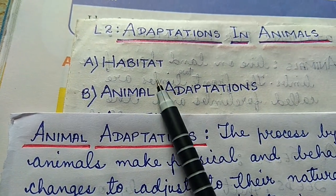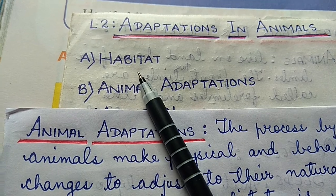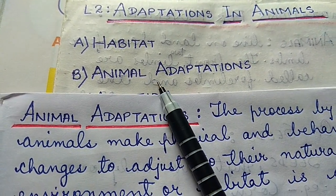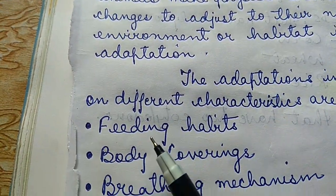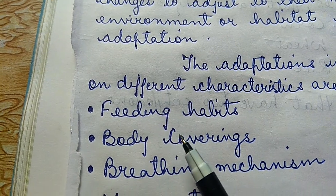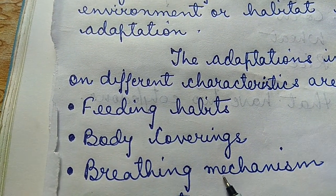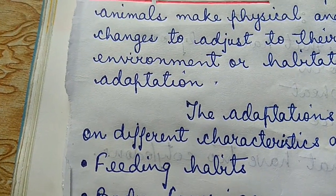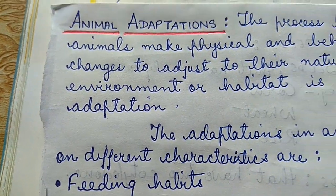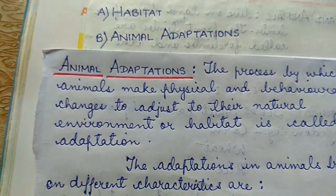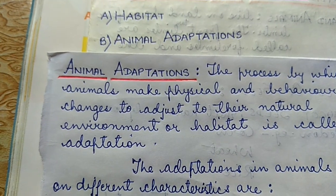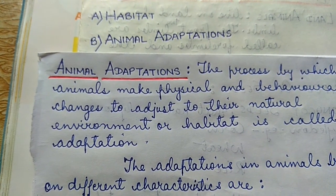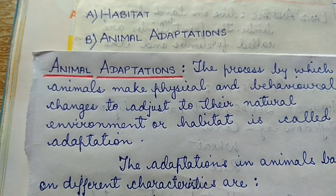So children, today we have dealt with the topic of habitat with its types, and animal adaptations which are based on feeding habits, body coverings and breathing mechanism. Next day we will deal with movement and migration. Today's assignment is to read the lesson nicely and learn the different examples under different topics. Thank you.